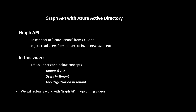In this video let's discuss Graph API with Azure Active Directory. In simple words, we can use Graph API to connect to an Azure tenant from our C# code. For example, using Graph API we can read the users from a tenant or invite new users from our C# code. In this video, we are not going to work with Graph API yet. Instead, we will first understand the following concepts: what is a tenant and AD, what are the users in a tenant, and what is app registration in a tenant and why it is used.